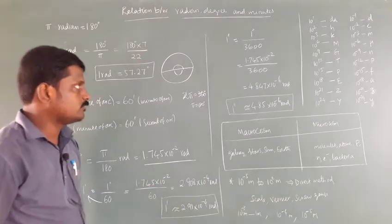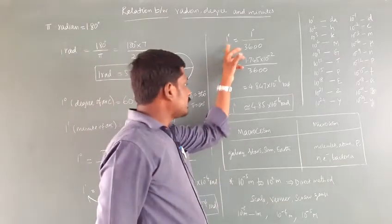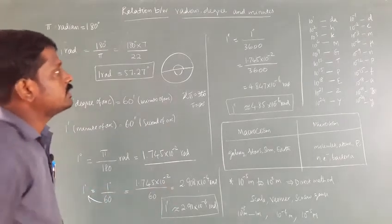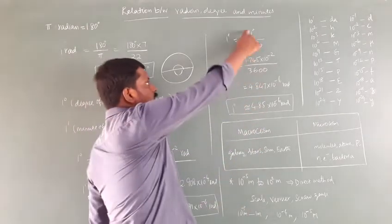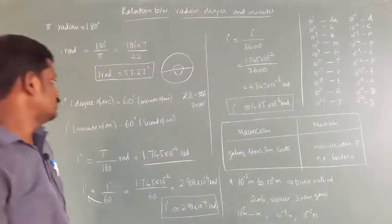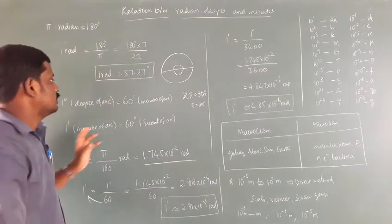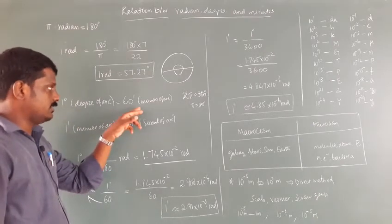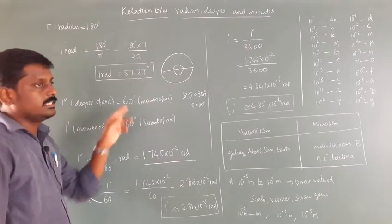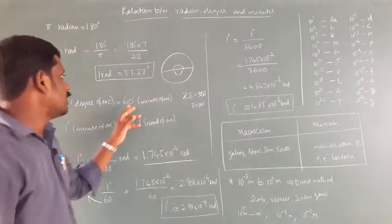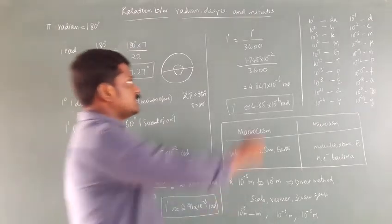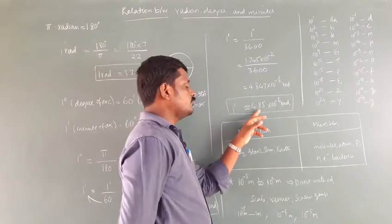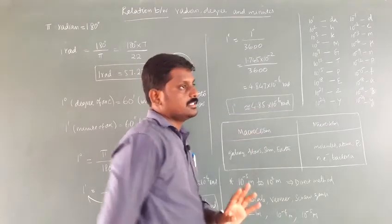There is a difference of 10⁻² between them. Then for 1 second: 1 second equals 1 degree by 3600, because 1 degree has 60 minutes and each minute has 60 seconds, giving 60 × 60 = 3600. Finally, 1 second is equal to 4.85 × 10⁻⁶ radians.